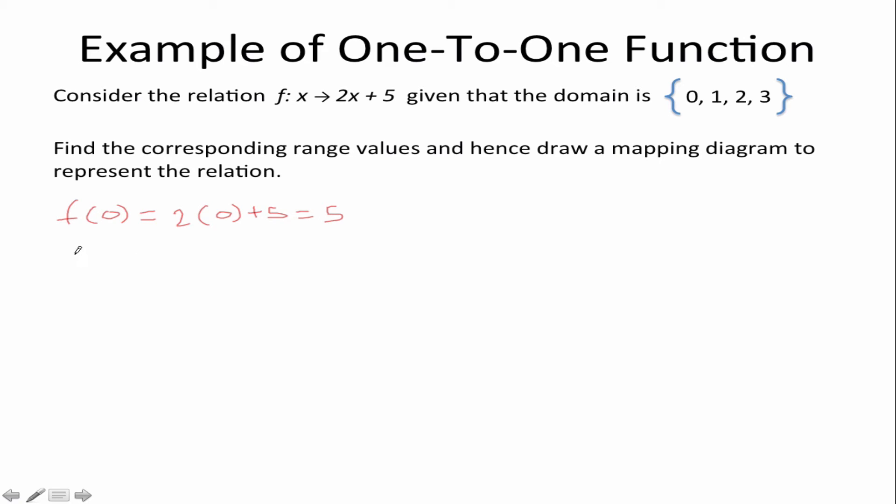f of 1 is equal to 7 and likewise you have f of 2 which is equal to 9, f of 3 which is equal to 11. So we have our inputs and we have our corresponding outputs so we can draw our mapping diagram.